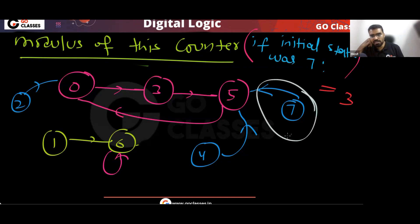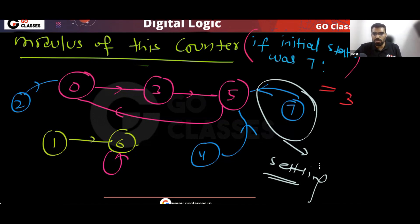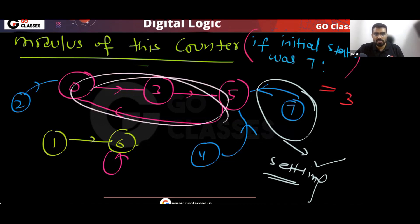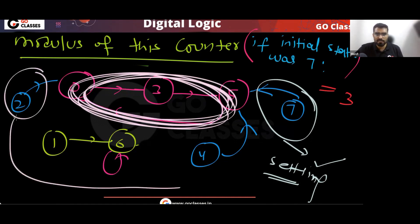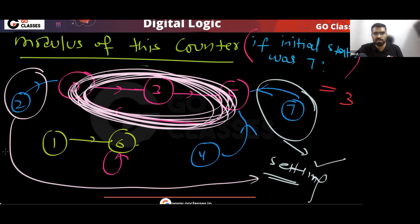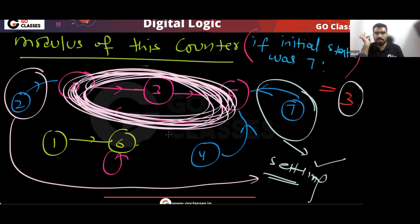You can think of those non-cycle paths as settling. The counter is settling — ultimately your counter wants this cycle. So don't consider the settling path; your answer for modulus will be 3. Only this loop matters, and ultimately the counter settles into this cycle.